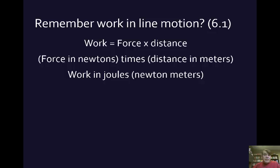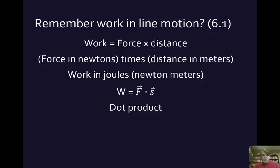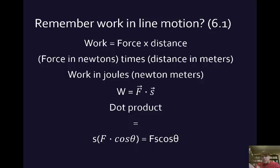That's fairly easy if the force and the distance are lined up. But what if the force is going at a different angle to the distance that it moves? Then we have a slightly different situation, because we're not interested in multiplying the force going one way times the distance it moves another way. What we do is find the dot product, which means we're only interested in the part of the force that's going in the same direction as the distance.